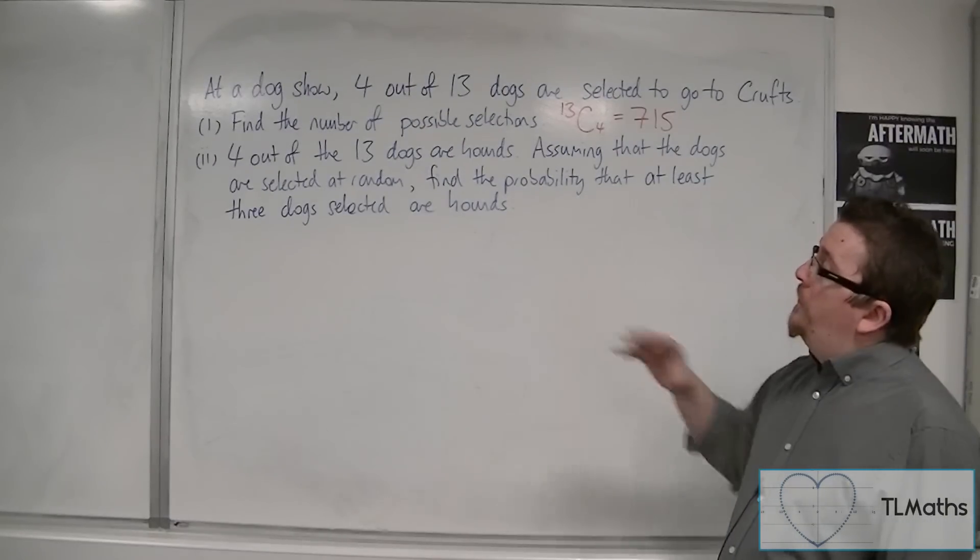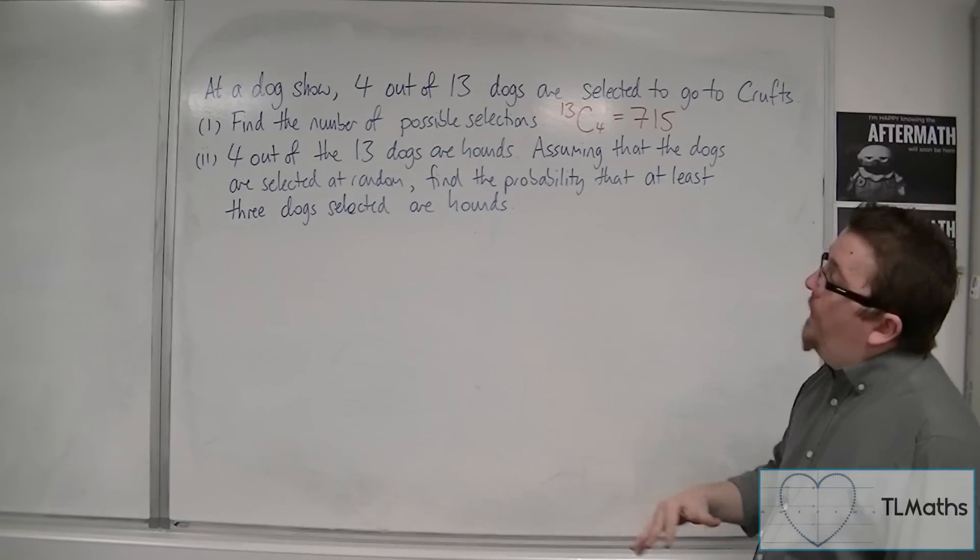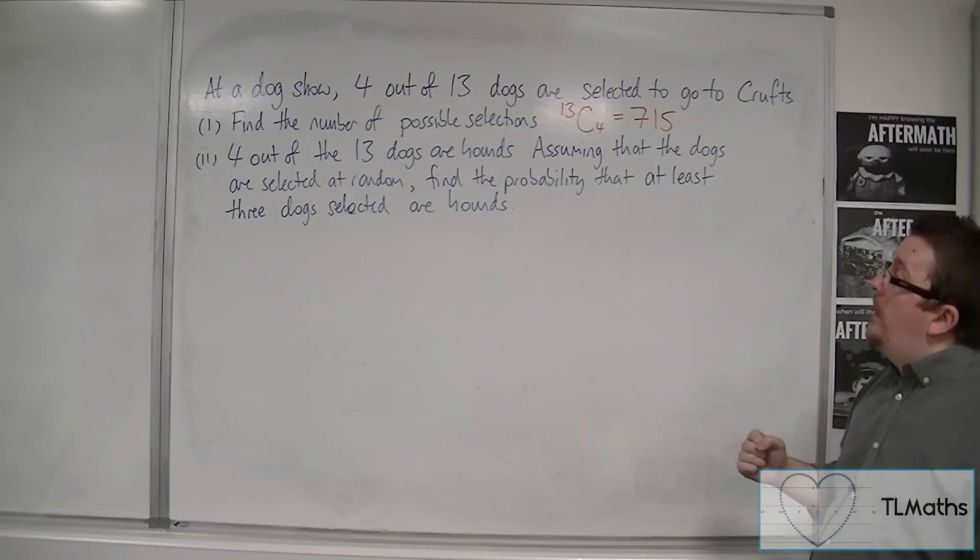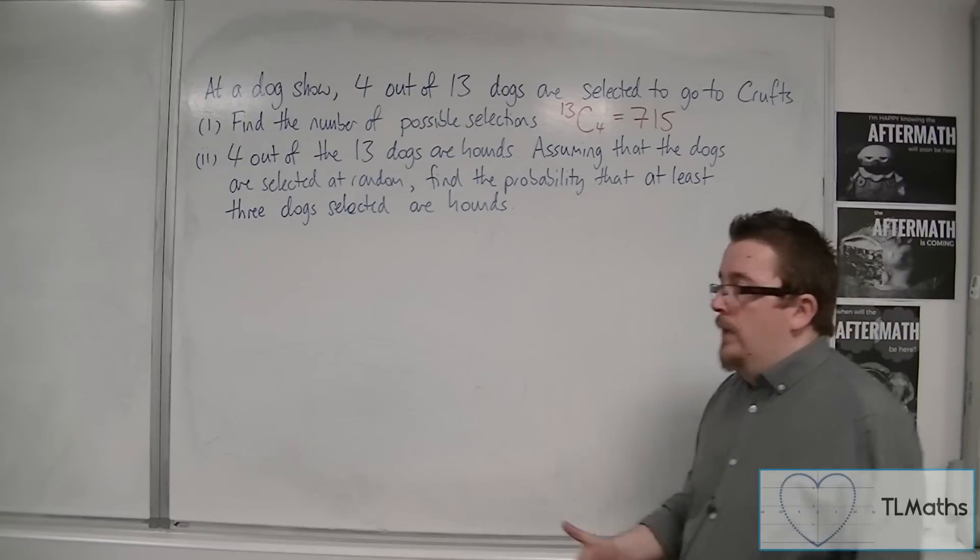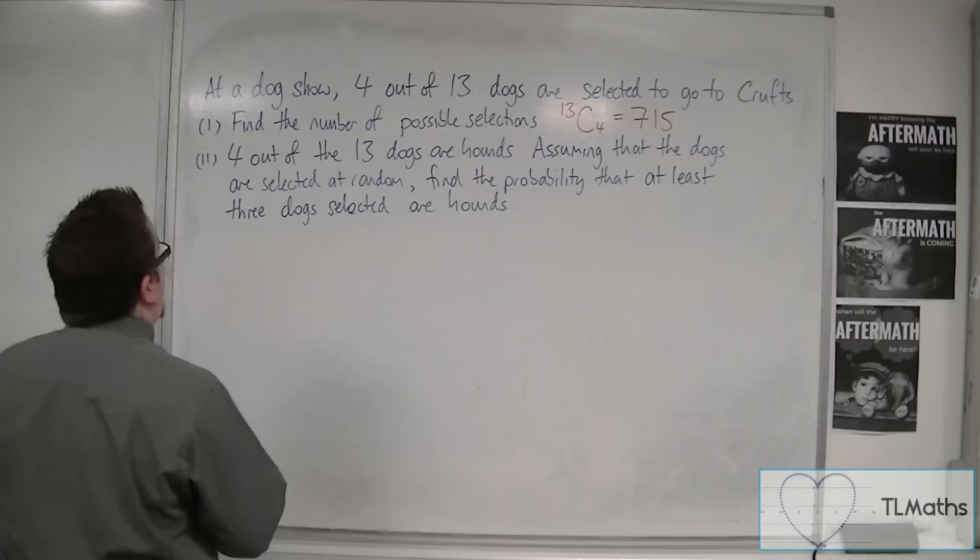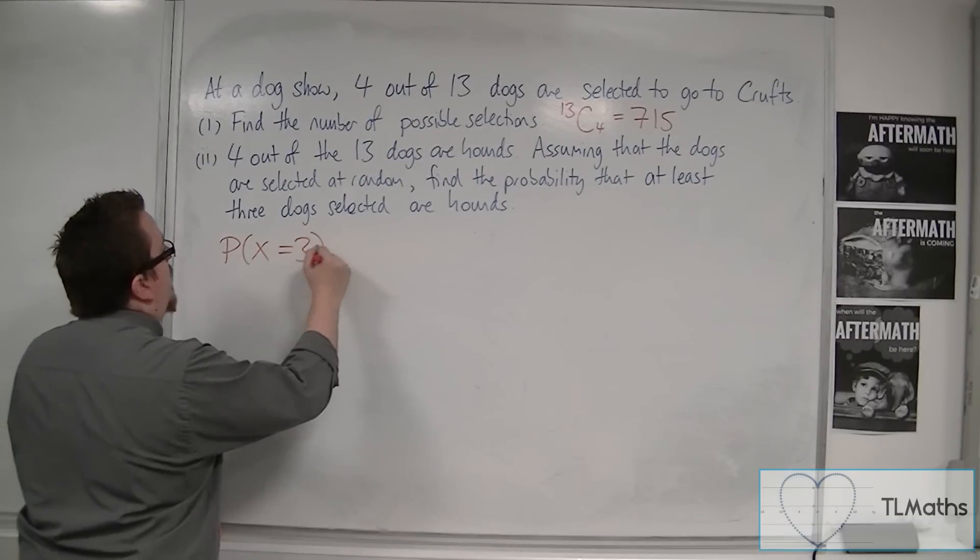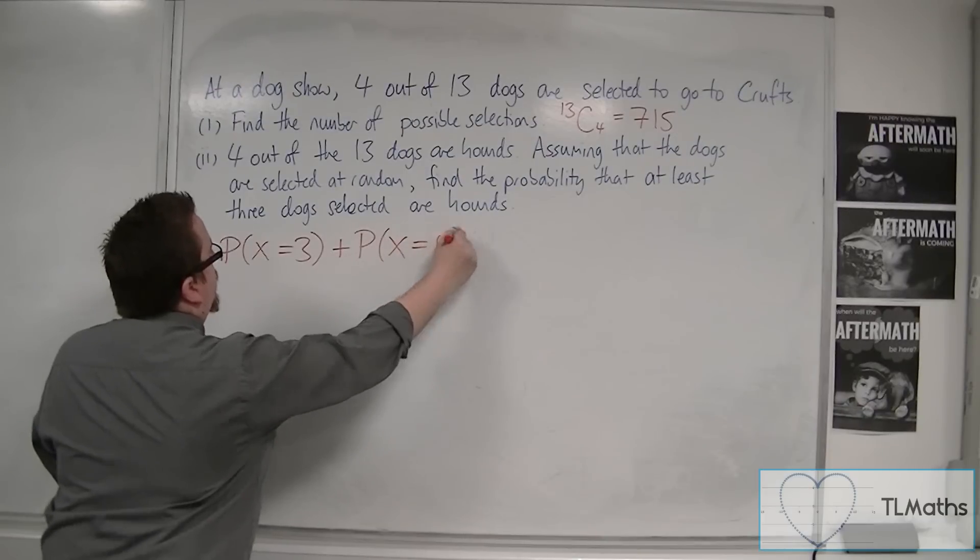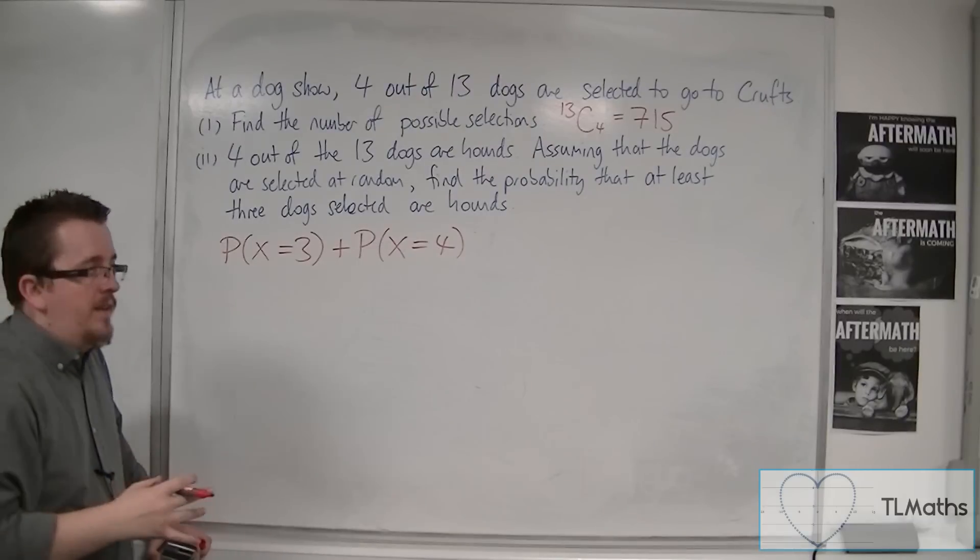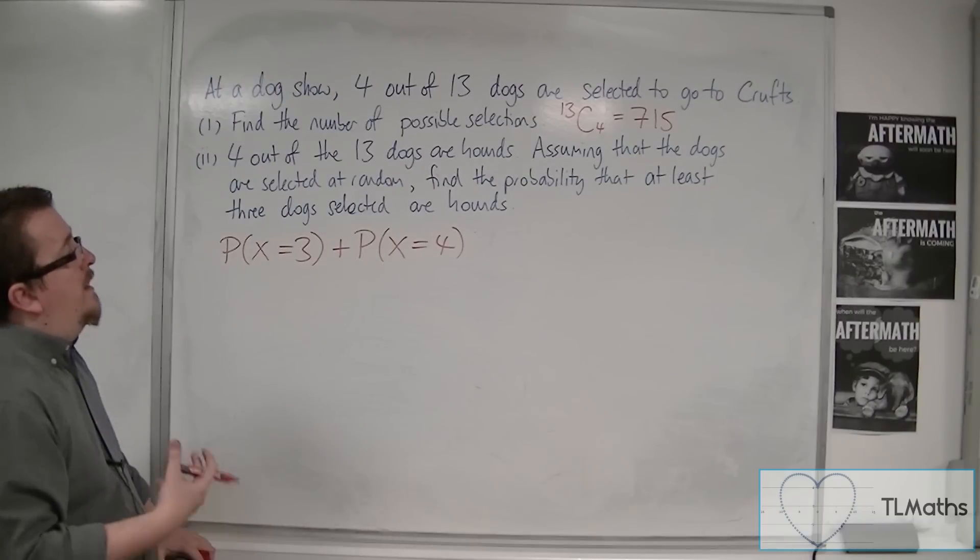So, 4 out of the 13 dogs are hounds. Assuming that the dogs are selected at random, find the probability that at least 3 dogs selected are hounds. So, because we're looking at least 3, we want to find the probability of X being equal to 3, and the probability of X being equal to 4, and add them together.